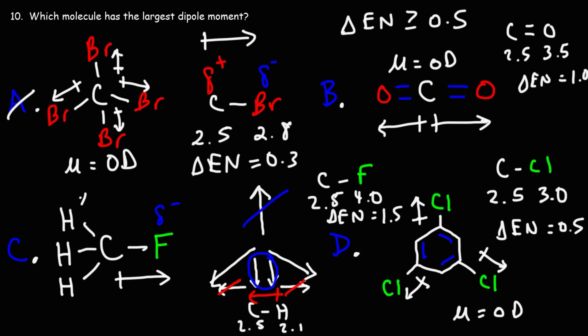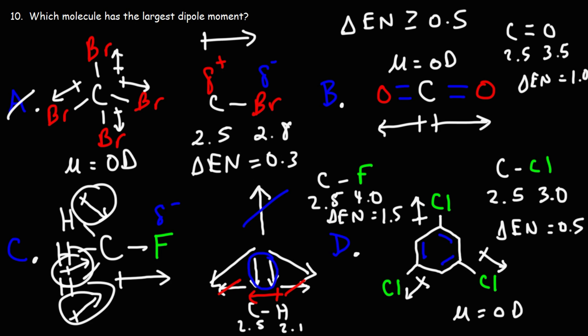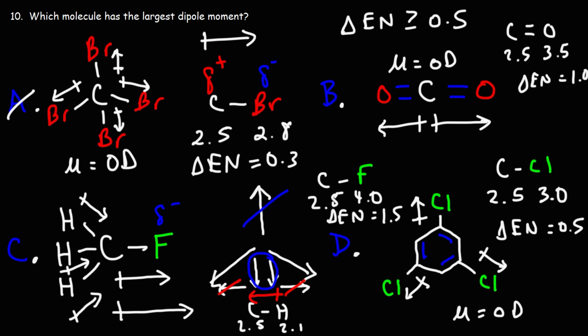The arrow for the C-H bond points towards the more electronegative carbon atom. So we have dipole moments pointing towards carbon for each C-H bond. Notice that the y-components of two of these vectors cancel — one has an upward y-component and one has a downward y-component. But the x-components of each of the three vectors generally point to the right, so the net dipole moment points in the positive x direction.